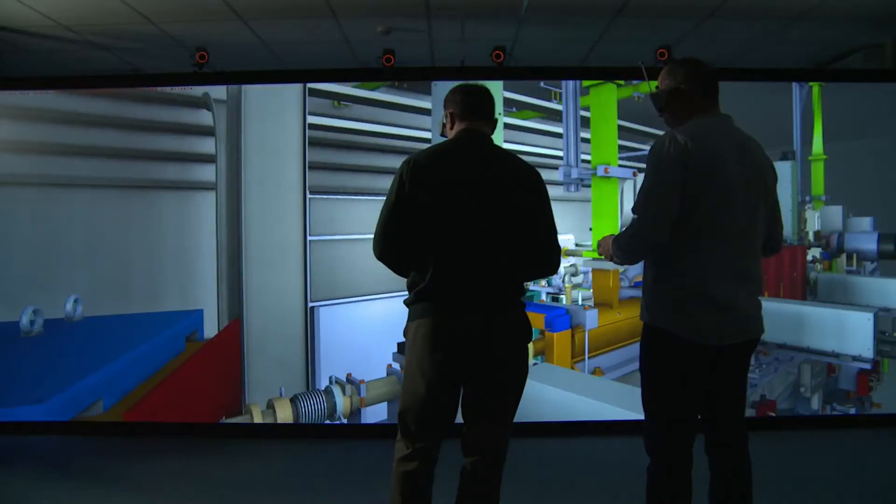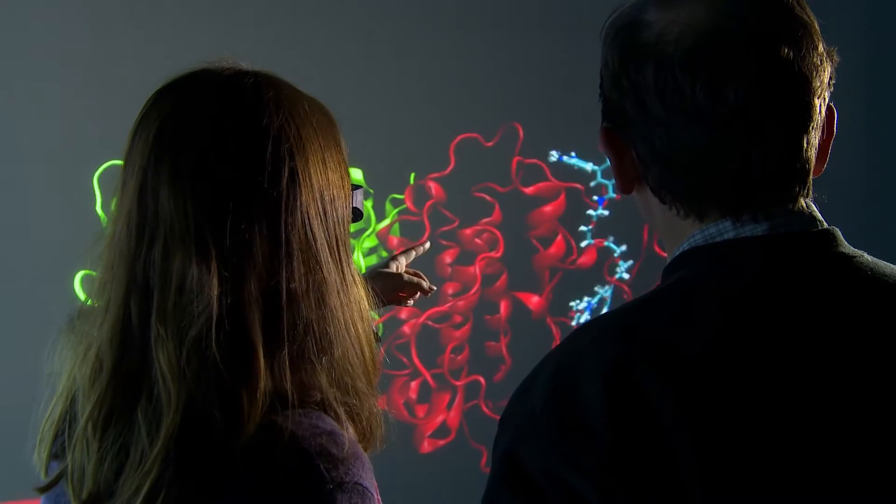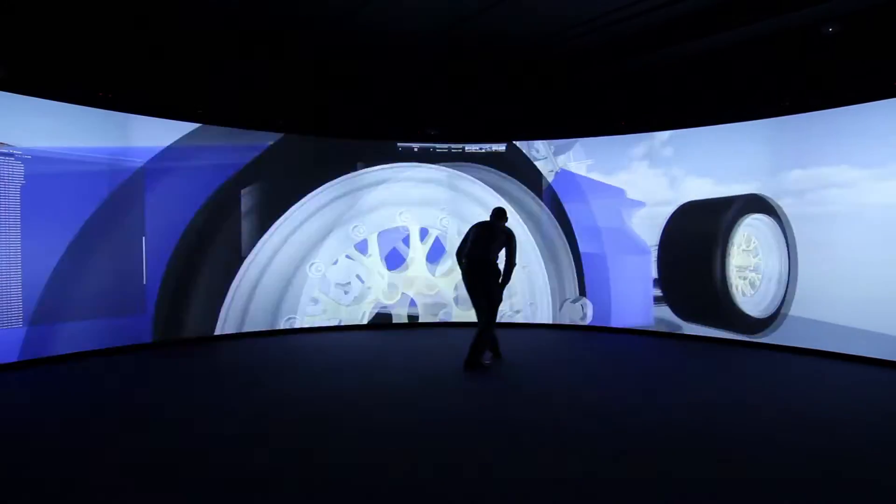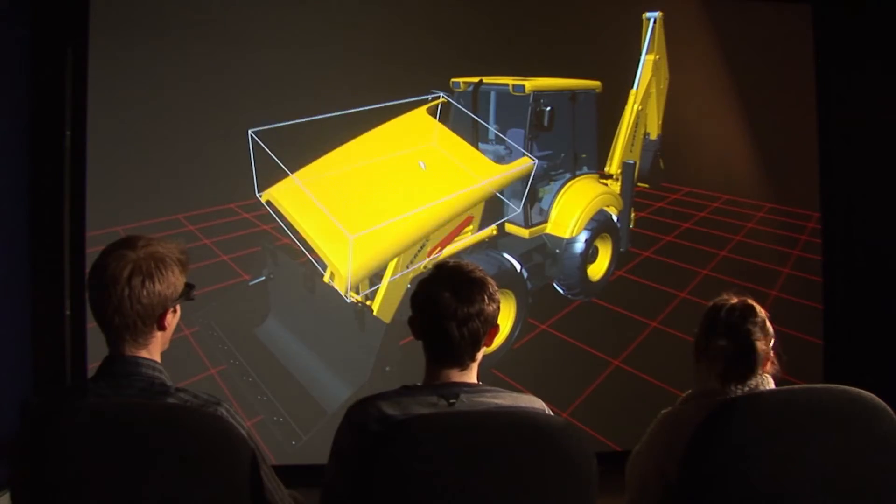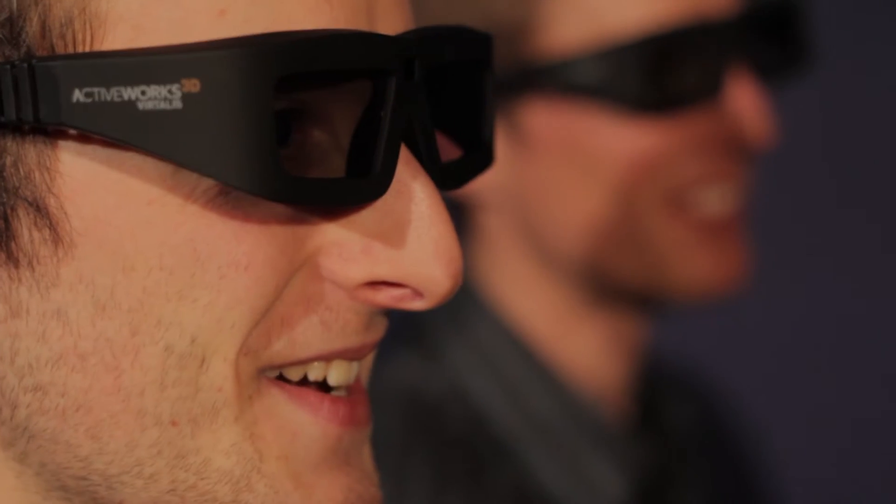Typically the first virtual reality system that a company may buy would be an active wall. This is a rear projected VR system. They would then be able to put up their products, their models, their information in 3D, so in stereographic 3D like you would see at the cinema with a pair of glasses on, and it would allow them to review the data or for group review of data, and that could be medical data, it could be engineering data.